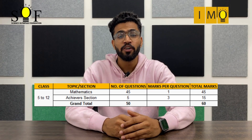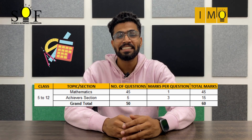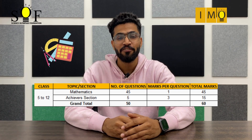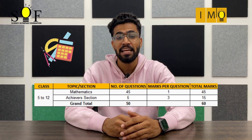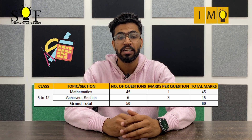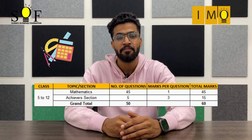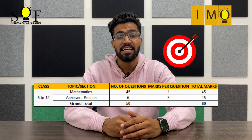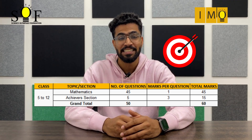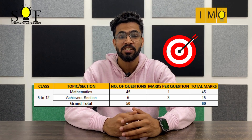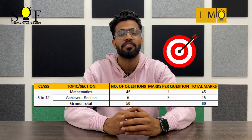For classes 5 to 12, Mathematics section will have 45 questions carrying 1 mark each, making this section a total of 45 marks. Achievers section will have 5 questions carrying 3 marks each, making this section a total of 15 marks.